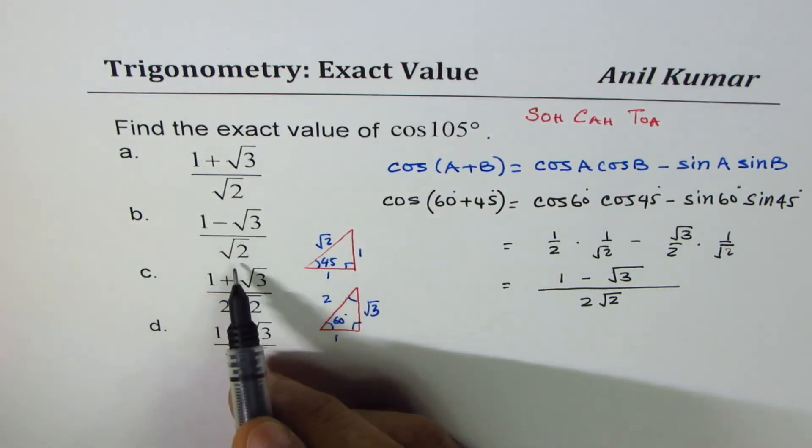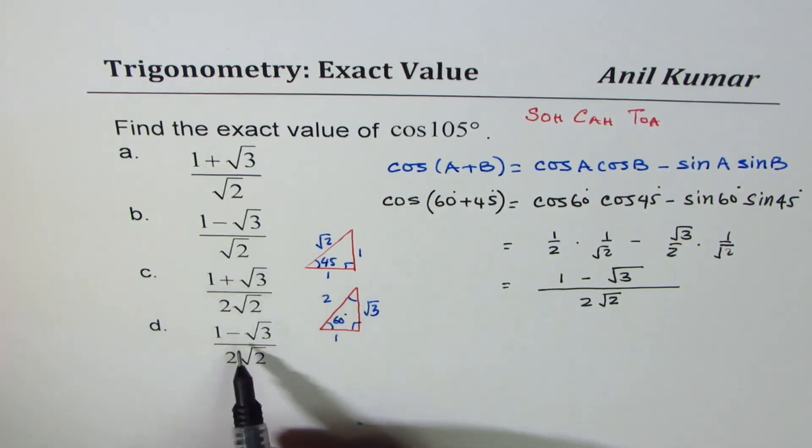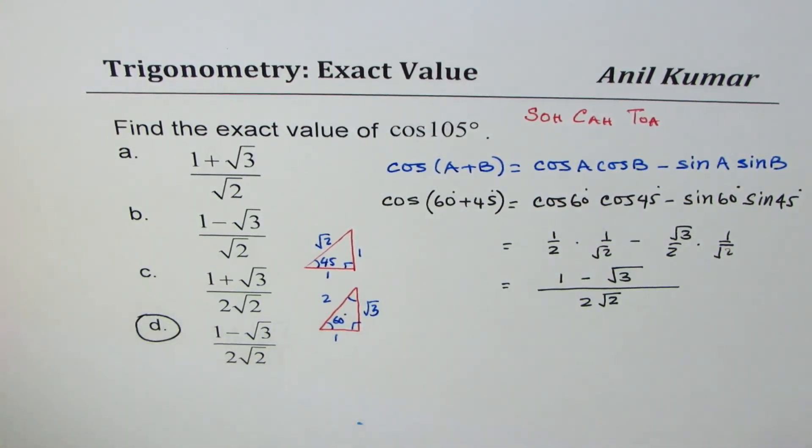1 minus square root 3 divided by 2 square root 2 is the last option. So that is how you're going to solve it. I hope the steps are absolutely clear.